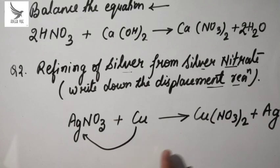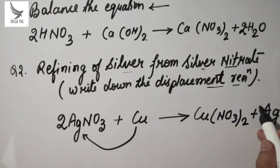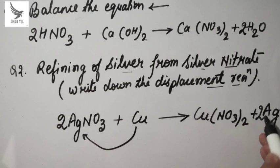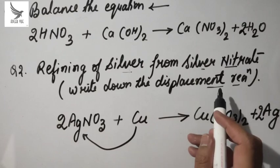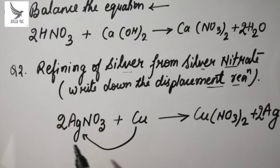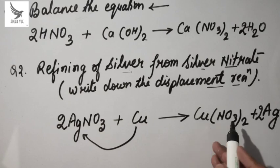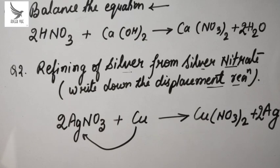Here we have nitrogen 2, so we balance it here and place the coefficient here. So this is our chemical reaction, which is an example of a displacement reaction. Here copper displaces silver — copper nitrate is formed and silver is formed. So this is the second question.